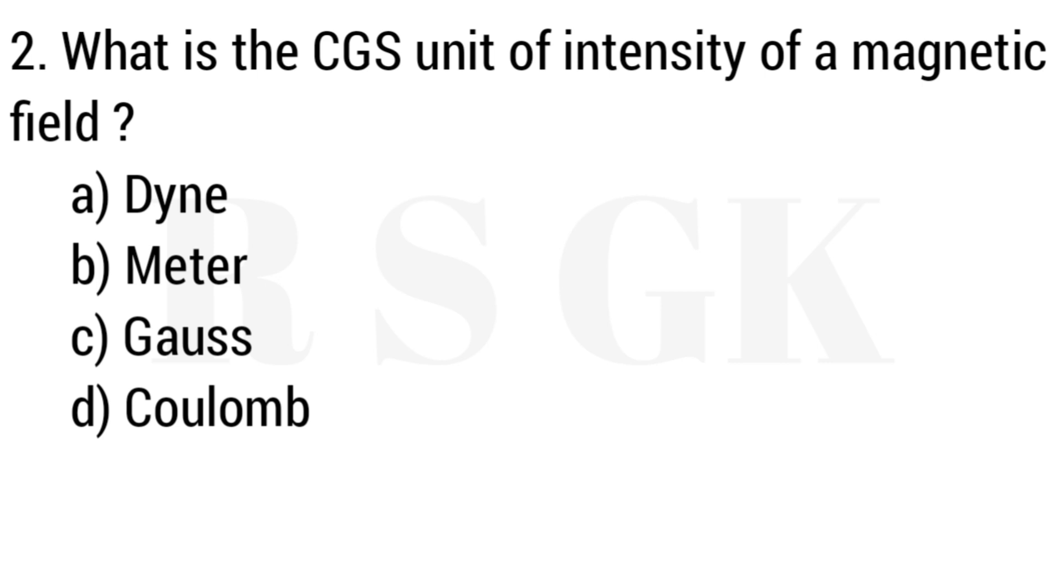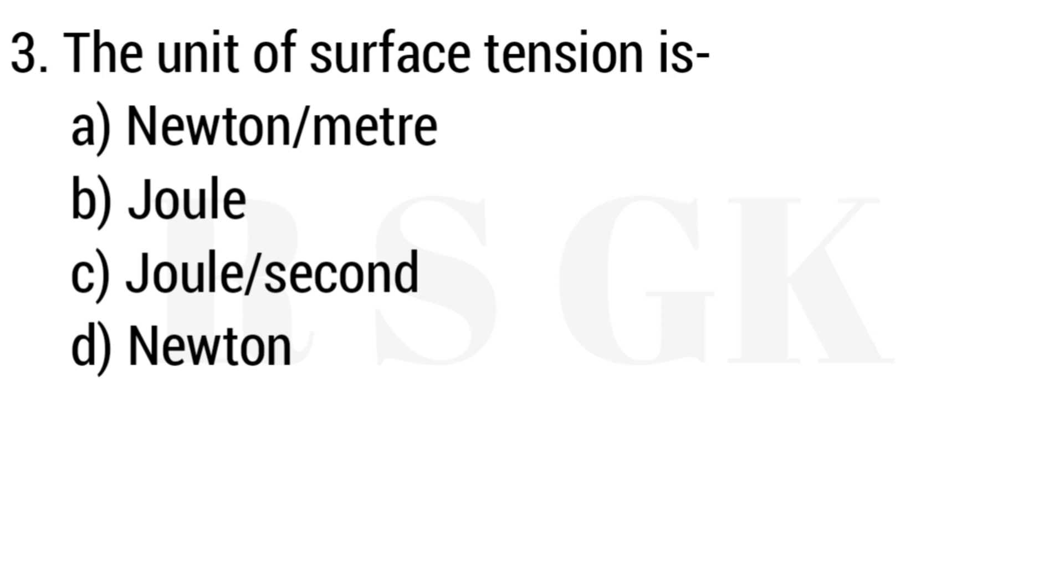Question 2: What is the SI unit of intensity of a magnetic field? Answer: Option C, Gauss. Question 3: The unit of surface tension is. Answer: Option A, Newton per meter.